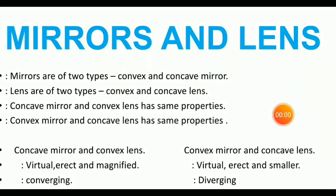Hello friends, welcome to my channel. Today's topic is mirrors and lenses. Mirrors are of two types: convex and concave. Lenses are also of two types: convex and concave. Concave mirror and convex lens have the same properties.